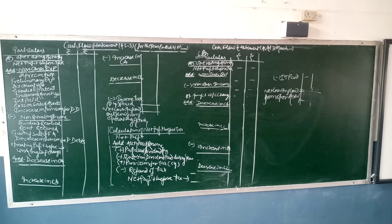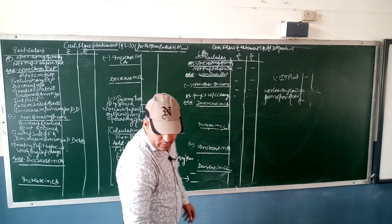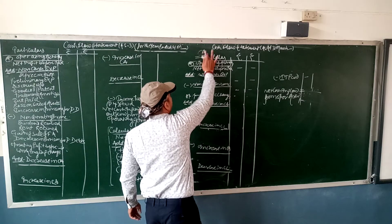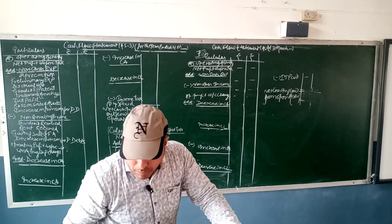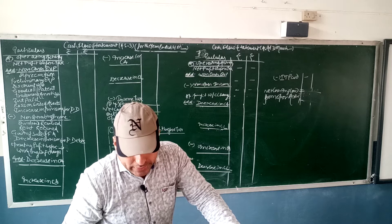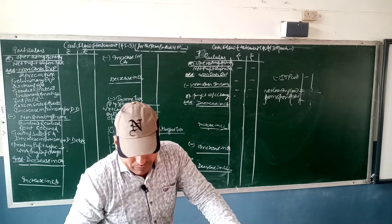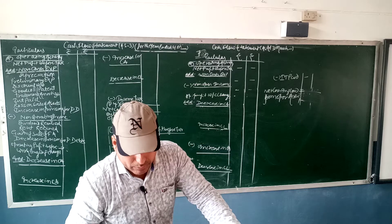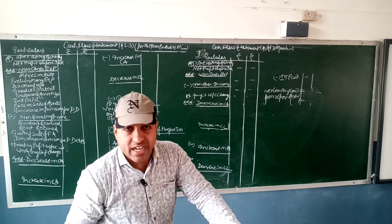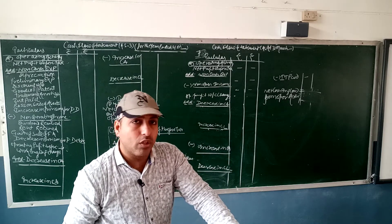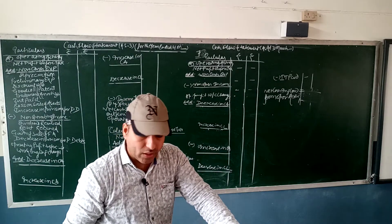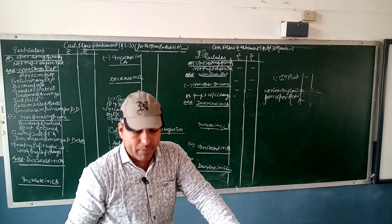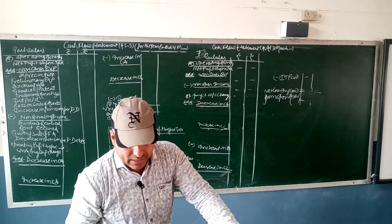Question number 7: calculate cash from operating activity from the following. Profit made during the year, after considering the following items: depreciation — which is a non-cash item — plus amortization of goodwill, goodwill written off at 5,000, plus loss on sale of machinery, plus non-cash item, profit on sale of land which is non-operating income — we will minus that — and then current assets and current liabilities.